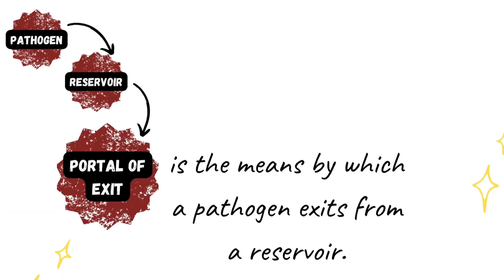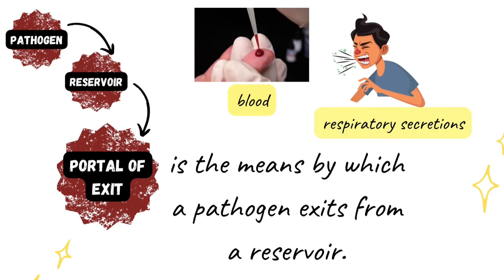The third link is the portal of exit — the means by which a pathogen exits from a reservoir. This can be through blood or respiratory secretions from the nose and mouth, such as sneezing, coughing, breathing, or talking. In Japan and Korea, even before the pandemic, people who have the flu or a cold often wear masks to avoid transferring or communicating these diseases to other people.